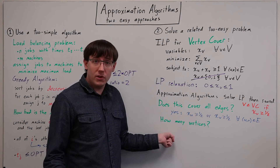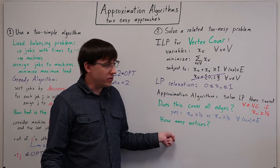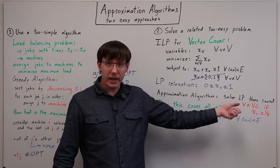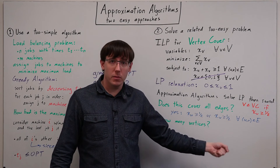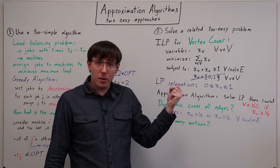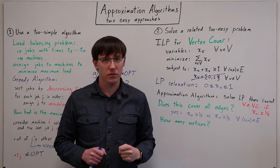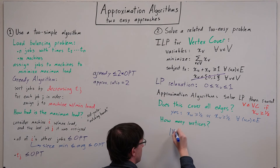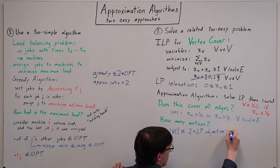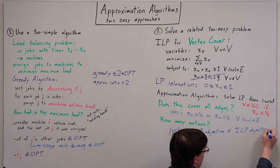So then the question is, how big is the resulting vertex cover? Can we relate the number of vertices we get from this algorithm to the optimal number of vertices in the smallest possible vertex cover?